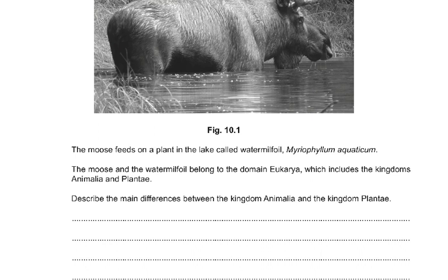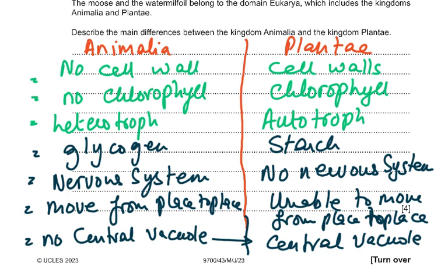A useful approach is to draw a table with Animalia and Plantae columns. Key differences: no cell wall vs. cell wall; no chlorophyll vs. chlorophyll present; heterotrophs vs. autotrophs; glycogen as food reserve vs. starch; nervous system present vs. absent; animals move from place to place vs. plants cannot; no large central permanent vacuole in animals vs. large central permanent vacuole in plants.